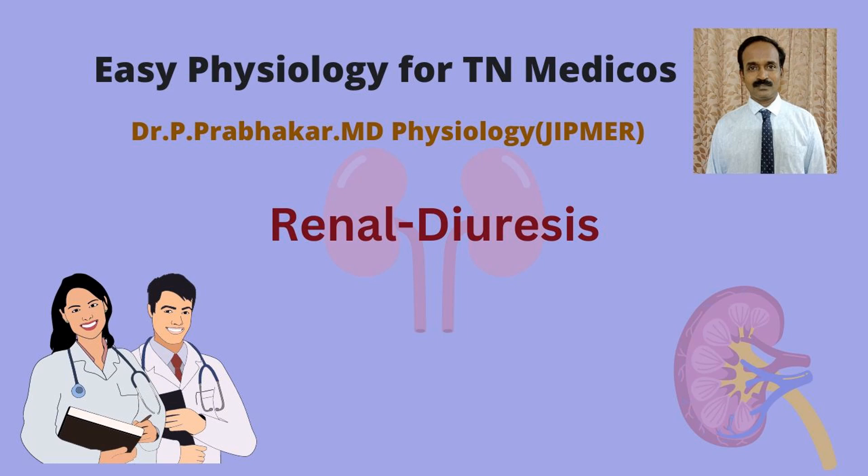Good morning. In this video, we are going to discuss diuresis. The average normal urine output is 1.5 liters per day. Diuresis involves forcing excessive urine volume, and it is divided into two types: water diuresis and osmotic diuresis.